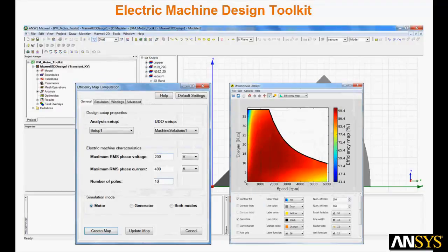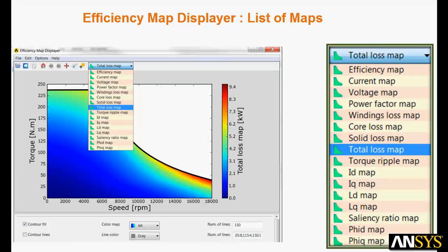ANSYS has created an electric machine design toolkit to address the challenges. Automated scripting built directly in the Maxwell interface allows you to set up efficiency map calculations and compute torque speed curves and efficiency maps automatically. An intuitive displayer is included with the design kit. A simple pull-down menu provides you immediate access to many maps including efficiency, current, voltage, power factor, core loss, and many others.